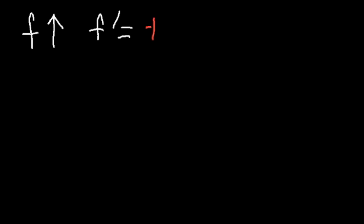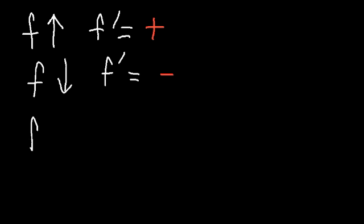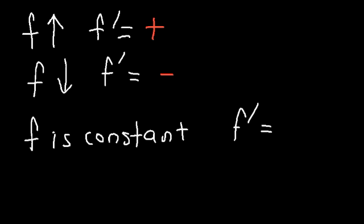You need to know that whenever a function is increasing in value, the first derivative is positive — that means the slope is positive. And if a function is decreasing in value, the first derivative is negative. If f is constant, then the first derivative is equal to zero.